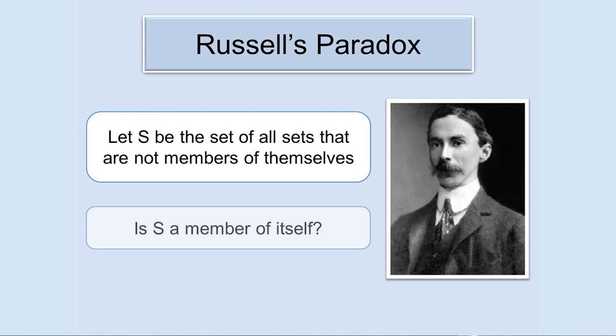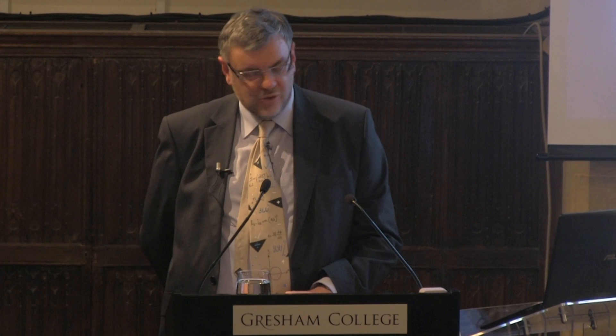Is the set S a member of itself? If it is, then since it contains itself, it's not a member of the set of all sets that don't contain themselves, which means S is not a member of itself. But if S is not a member of itself, then it must be a member of the set of all sets that don't contain themselves, so it is a member of itself. We have a loop, very similar to that of the liar, as in Raymond Smullian's interview.